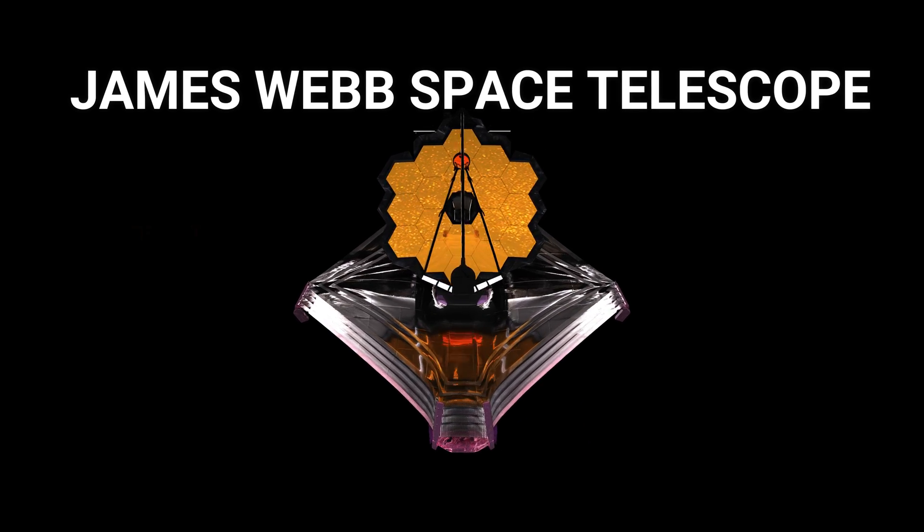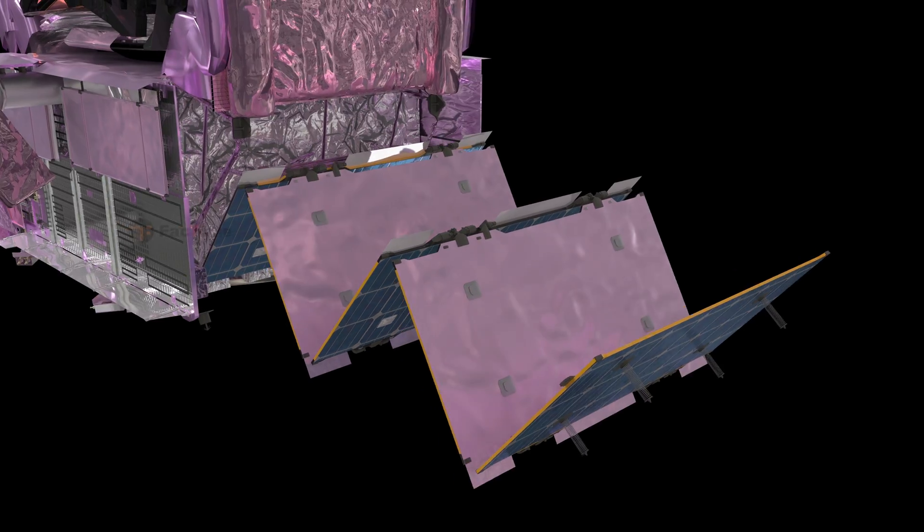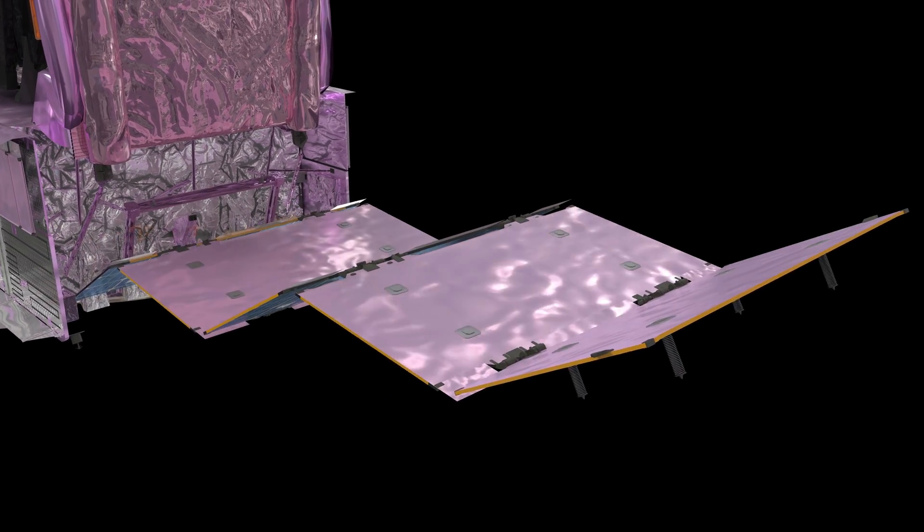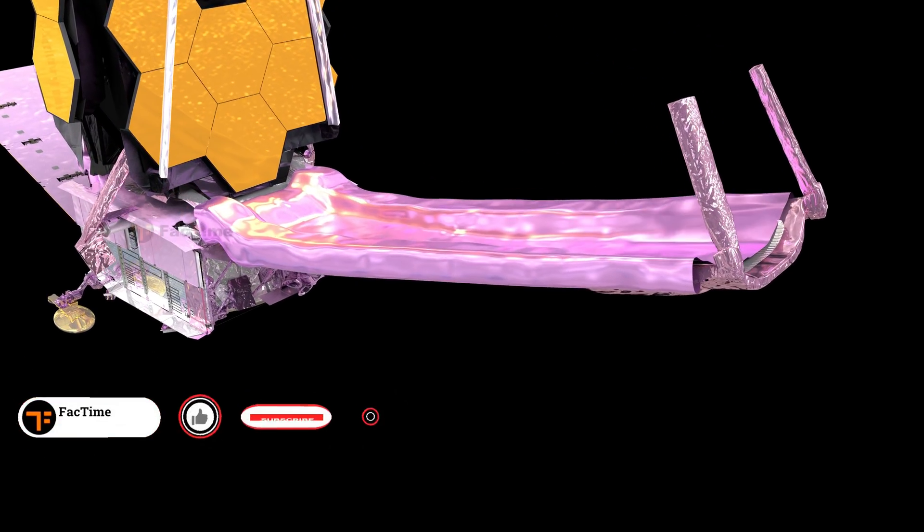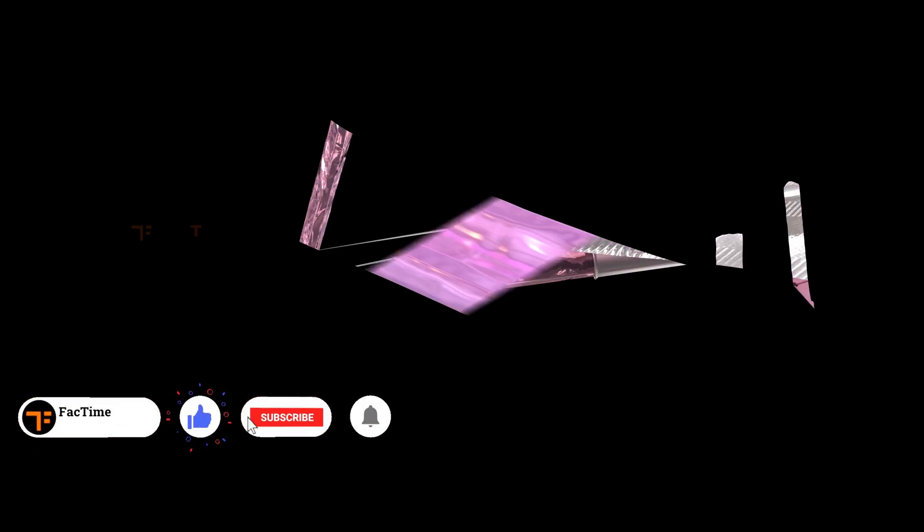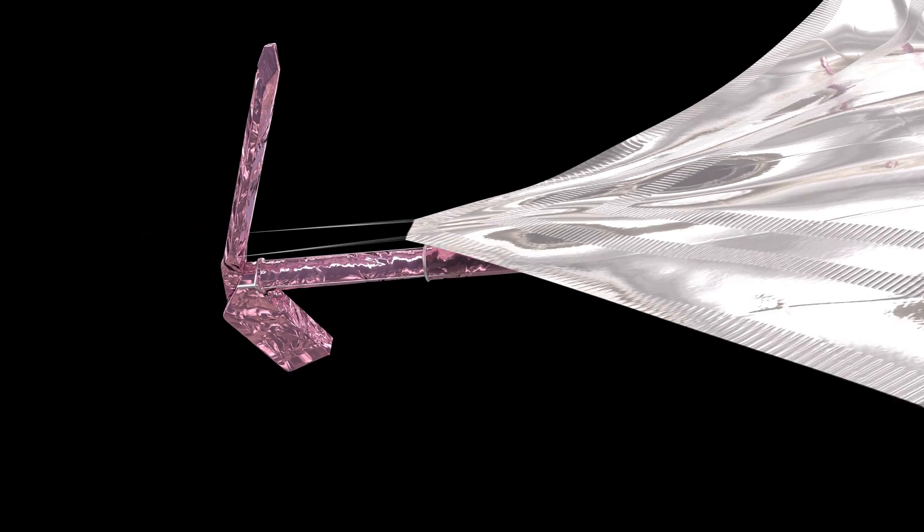James Webb Space Telescope: the engineering behind the first light machine that is not allowed to fail. The most complex and expensive space observatory ever built has pushed engineers and technologies to their limits. Hello friends, welcome to Fact Time.